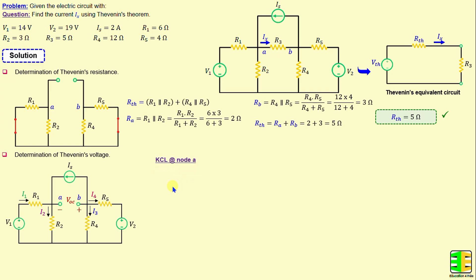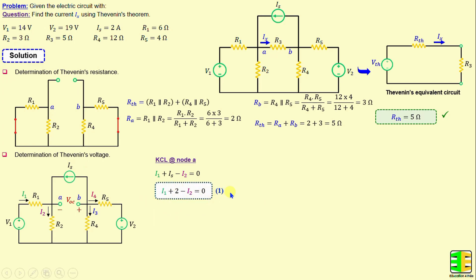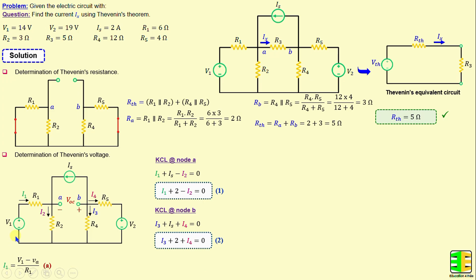By applying Kirchhoff's current law at node A, we can write: I1 plus IS minus I2 is equal to 0. At node B, I3 plus IS plus I4 is equal to 0, and substituting the numerical value of IS gives I3 plus 2 plus I4 equals 0. Now according to Ohm's law: I1 equals V1 minus VA over R1, I2 equals VA over R2, I3 equals VB over R4, and I4 equals VB minus V2 over R5. VA and VB represent the node voltages at nodes A and B respectively.